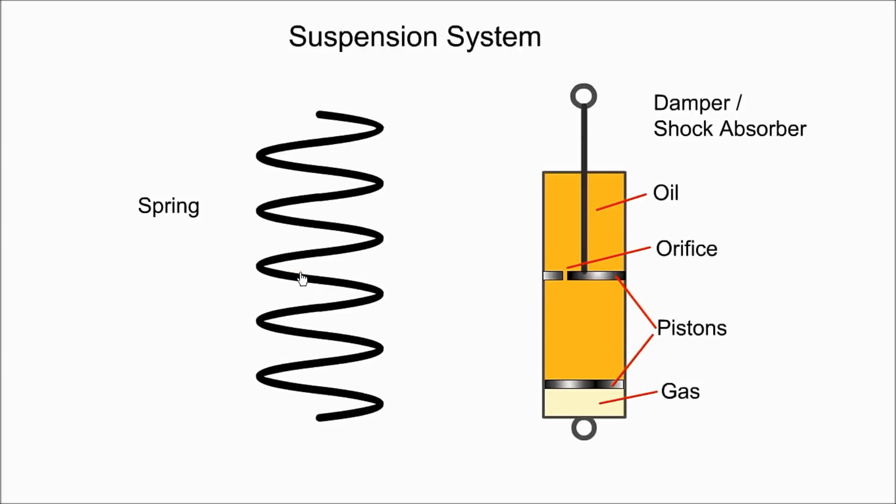Coil springs store and absorb shock energy by compressing and extending. When the wheel is pushed upwards by a bump, the spring prevents the shock from reaching the chassis and maintains the tire in contact with the road. A damper converts the oscillations of the spring to thermal energy. The damper is filled with oil. When the car hits a bump, the oil is forced through a small orifice, thus slowing down and damping the movement of the piston.